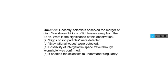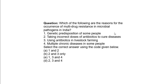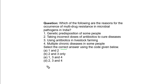Which of the following are reasons for the occurrence of multi-drug resistance in microbial pathogens in India? Statement 1: Genetic predisposition of some people. Statement 2: Taking incorrect doses of antibiotics to cure disease. Statement 3: Using antibiotics in livestock farming. Statement 4: Multiple chronic diseases in some people. Select the correct answer using the code given below. Options: 1 and 2; 2 and 3; 1, 3 and 4; 2, 3 and 4.